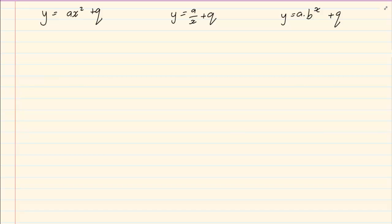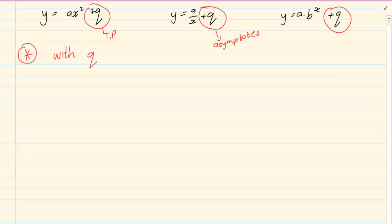When we want to get the equation of the graph, the steps are very similar. We're always going to start with q. We know for the parabola, the q is the turning point. We know for the hyperbola and exponential, the q is the asymptote. So we always start by substituting the q.